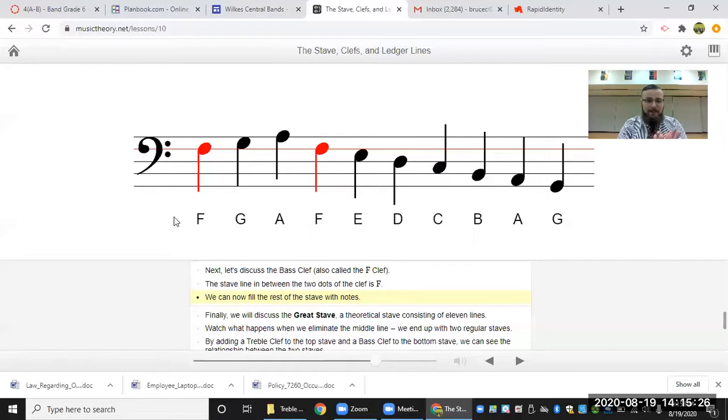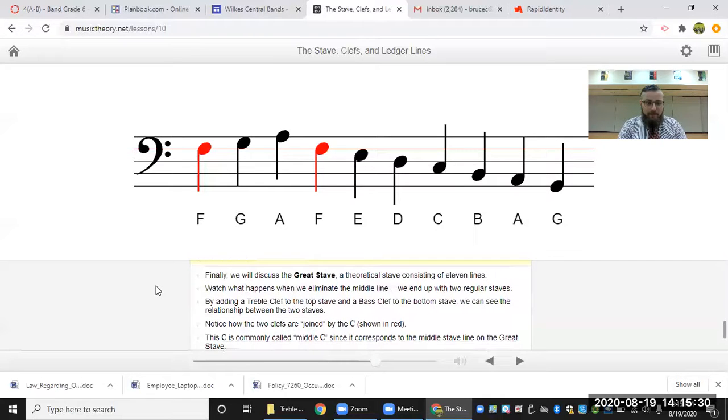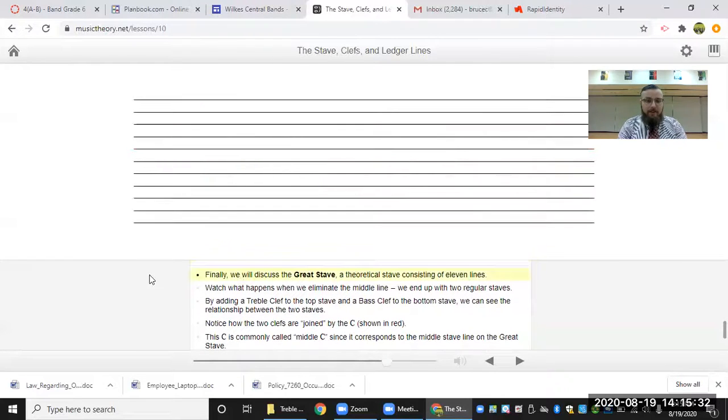So that's the bass clef. Let's go ahead and move on. Finally, we will discuss the great staff, a theoretical staff consisting of 11 lines, also known as grand clef. This is what piano players read. Watch what happens when we eliminate the middle line. We end up with two regular staves. So there's five lines at the bottom, five lines at the top, and we just took away the middle line there.